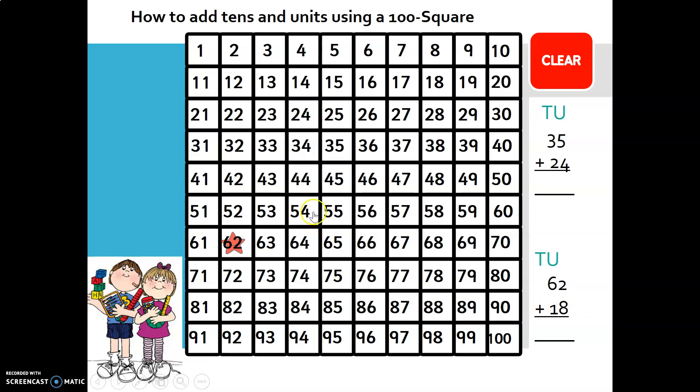If we move down one row, we've added 10. So 62 just below it is 72. So that's our 10.